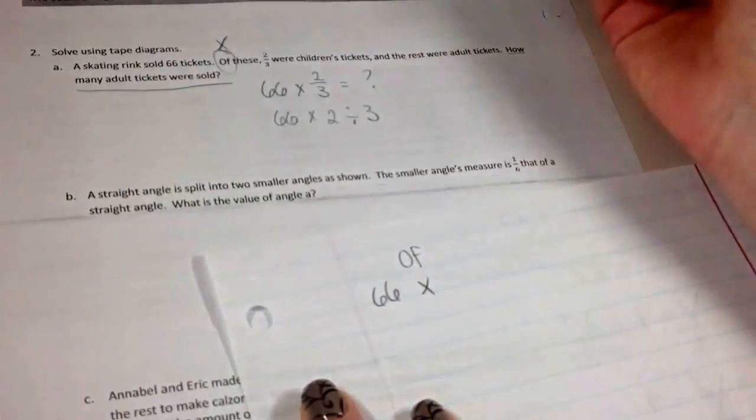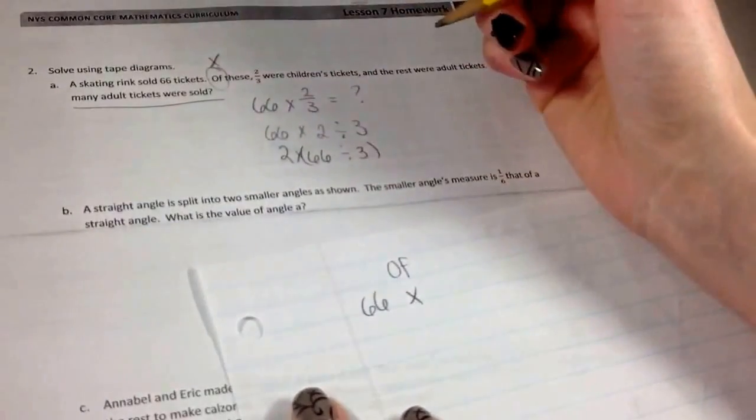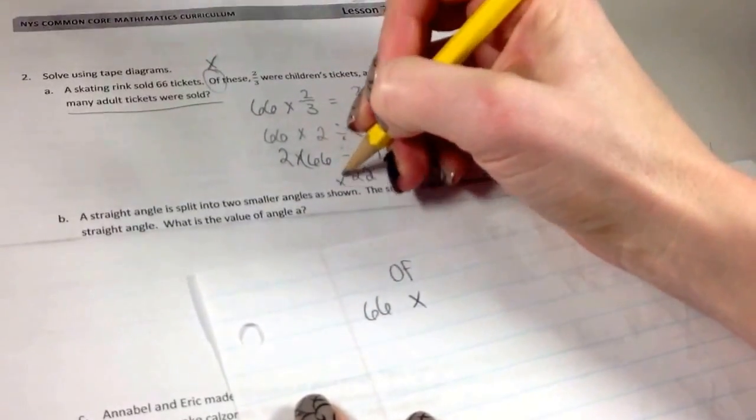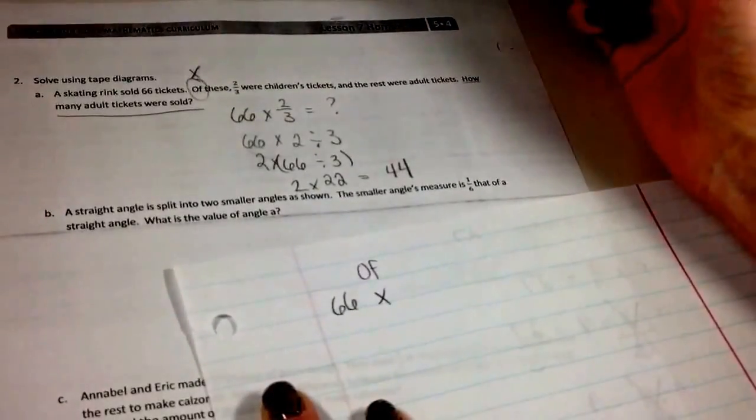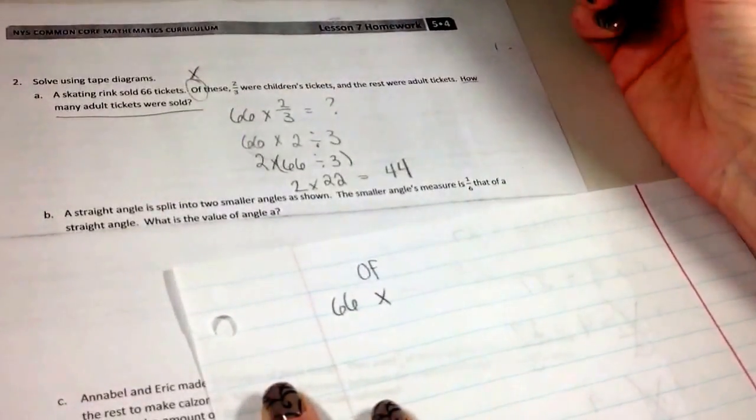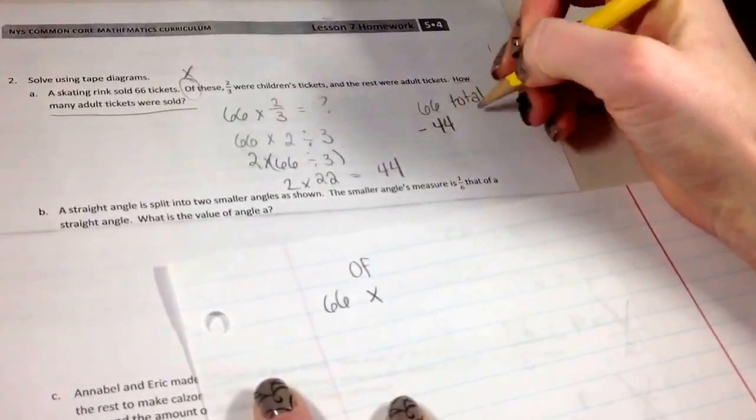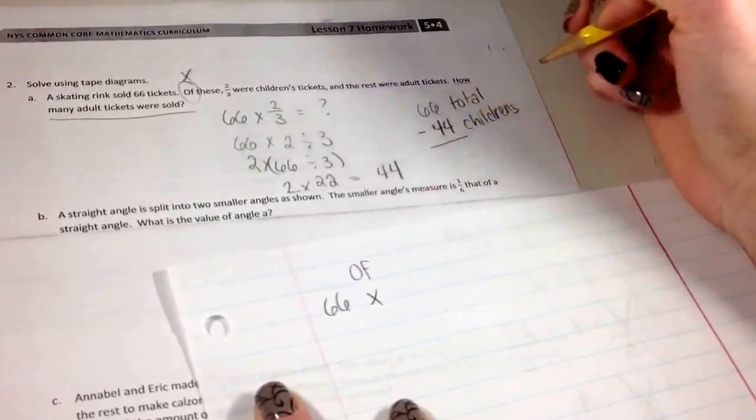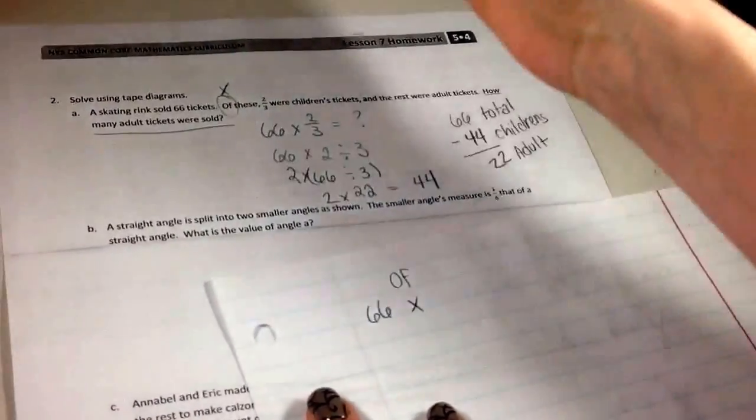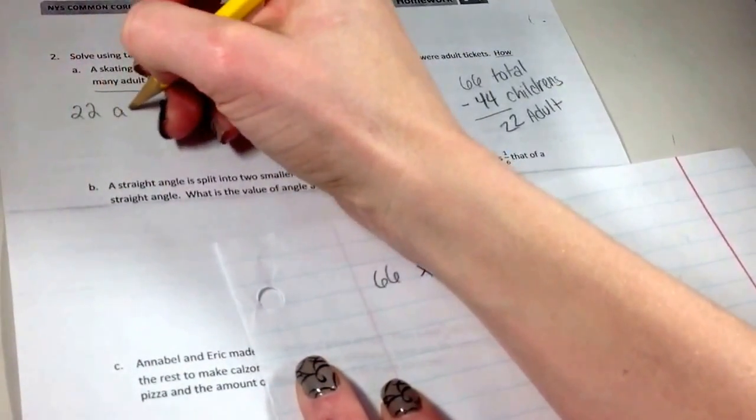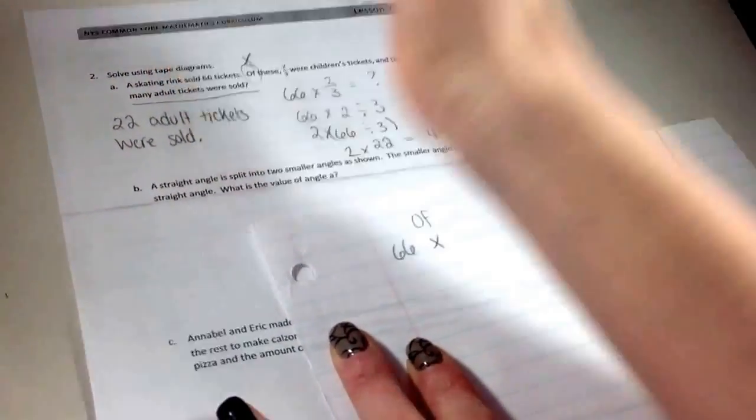So you're taking 66 times 2 divided by 3. And I like the way this 3 and the 66 fit together. So again, I'm going to flip the order of these two. 2 times 66 divided by 3. I'm going to do that first. 66 divided by 3 is 22. So that leaves me 2 times 22. And that's going to give me 44. So I know 44 are children's tickets. So if I want to know how many are adult tickets, well, I have the total tickets, which was 66. I'm going to subtract out how many were children's. And I end up with the adult tickets. So that'll give me 22. So I have how many adult tickets were sold? 22 adult tickets were sold.